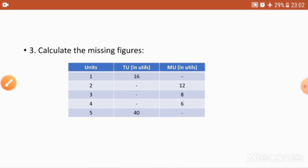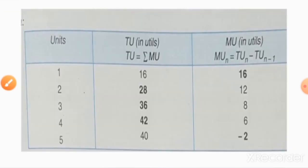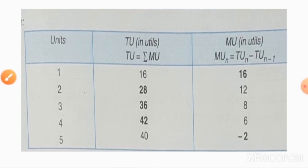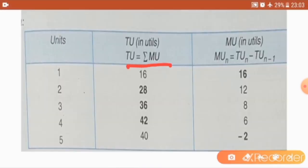Now we understand how to calculate the missing figures of total utility and marginal utility. The formula is given in both columns — total utility and marginal utility. The remaining problems we will see in the next class. Thank you, children.